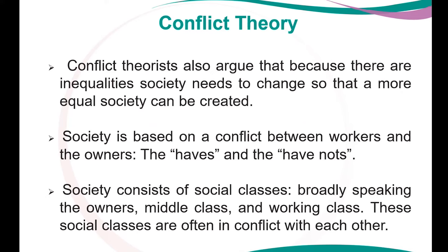As already mentioned, society is based on a conflict between the workers and the owners. At the end we have the haves and the have-nots in society. Society consists of social classes — broadly speaking, we have the owners, the middle class, and the working class. These social classes are often in conflict with each other because of the unequal distribution of resources in society.